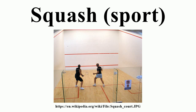The squash court is a playing surface surrounded by four walls. The court surface contains a front line separating the front and back of the court, and a half-court line separating the left and right-hand sides of the back portion of the court, creating three boxes: the front half, the back left quarter and the back right quarter. Both back boxes contain smaller service boxes. The floor markings on a squash court are only relevant during serves. There are four walls to a squash court, with the front wall having the largest playing surface.